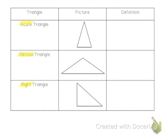An acute triangle is a triangle with three acute angles — all three angles are acute. If we look at each one of these angles, they are all acute angles. Sometimes it helps to turn your picture of the shape and look at it from a different direction.